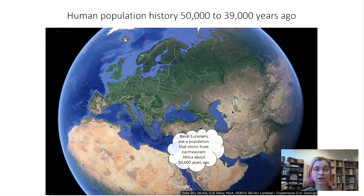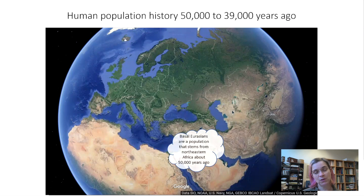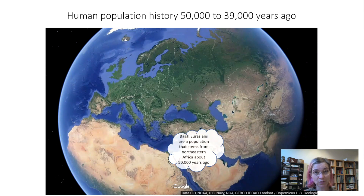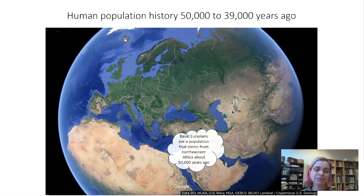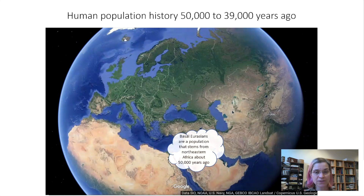We're going to focus on human population history from about 50,000 years ago to about 39,000 years ago. When they analyzed those 51 ancient genomes, they found evidence of a population that lived in the Levant region of the world, which I've indicated here with a cloud figure. There was a population that lived in this region around that time period, and they call them the Basal Eurasians — a population that stems from Northeastern Africa starting at about 50,000 years ago.